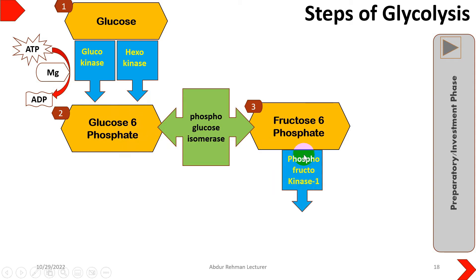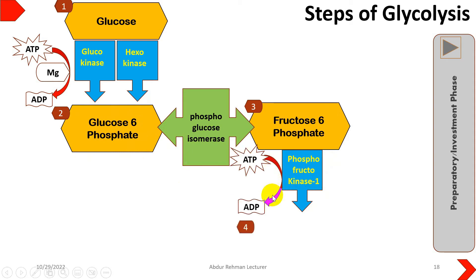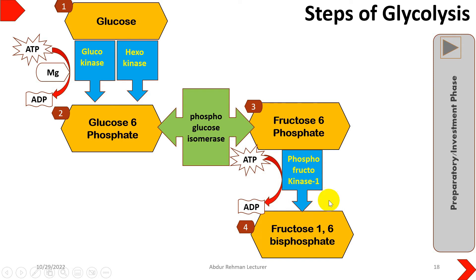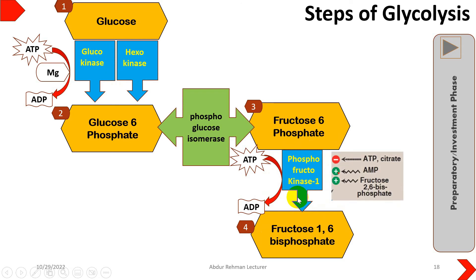Then another regulatory step occurs — phosphofructokinase — and this is known as the committed step. Again, another ATP will be used and it will result in the production of fructose 1,6-bisphosphate. Remember, wherever kinase enzymes are involved, there will be utilization or production of ATP. This second regulatory step involves phosphofructokinase-1, which converts fructose 6-phosphate into fructose 1,6-bisphosphate.